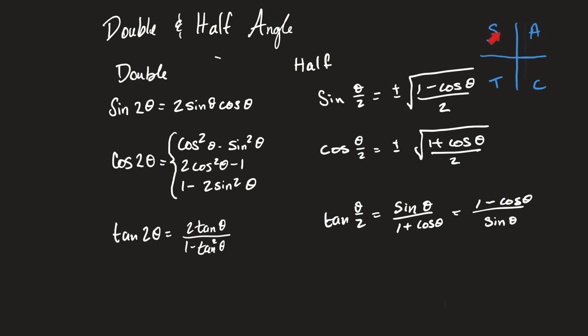Sine is positive here which would make cosine and tangent negative. Here we have tangent to be positive, that would make sine and cosine negative, and then cosine is positive here and that would make sine and tangent negative here. So that kind of tells you how we get those kinds of things to happen.